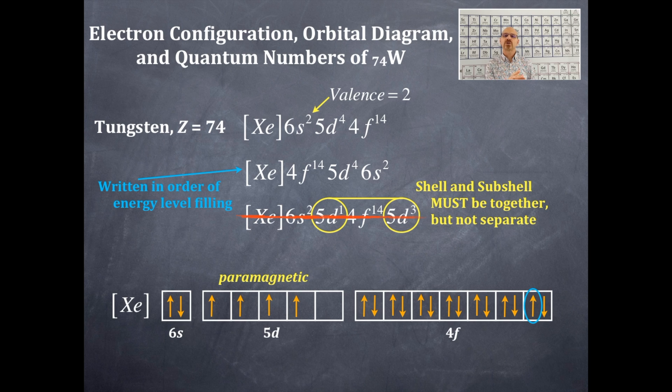Label the boxes with the middle box being 0, to the left negative 1, 2, 3, to the right positive 1, 2, 3. Which box am I in? This is the 3D orientation. m sub l value is 3 because it's in box number 3. The electron is upward facing, so m sub s is positive one-half. So n=4, l=3, m_l=3, m_s=+½.